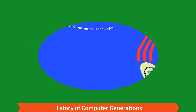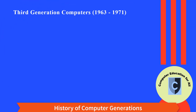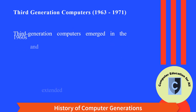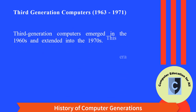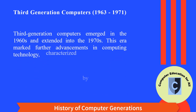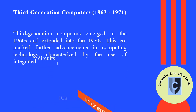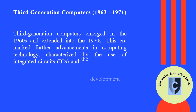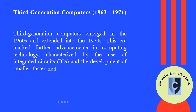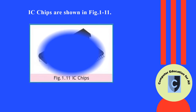Third generation computers emerged in the 1960s and extended into the 1970s. This era marked further advancements in computing technology, characterized by the use of integrated circuits (ICs) and the development of smaller, faster, and more reliable systems. IC chips are shown in FIG. 1-11.